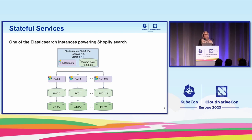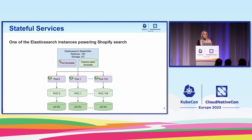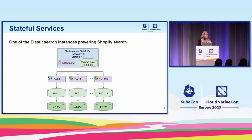To give a better sense of the scale, an Elasticsearch StatefulSet that stores search data for Shopify Core is composed of 120 pods, each of them having a 4-tebibyte persistent disk. For high availability reasons, we have multiple instances of Elasticsearch of this size deployed across the globe.